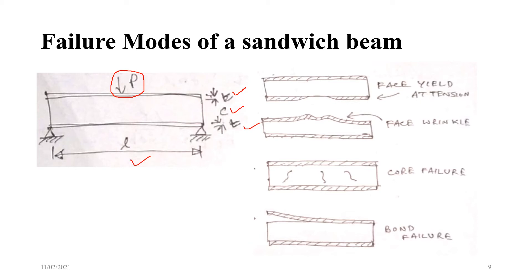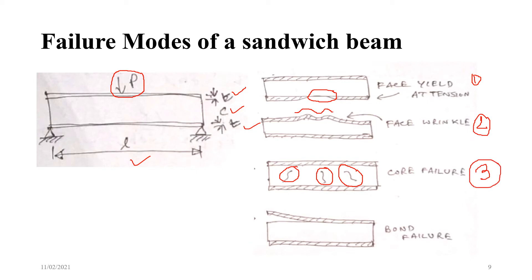There are four failure modes. First, yielding at the face during tension. Second, face wrinkling. Third, shear failure of the core. Fourth, debonding — where the bond between the face and the core fails. So the four modes are: face yielding, face wrinkling, core failure, and bond failure.